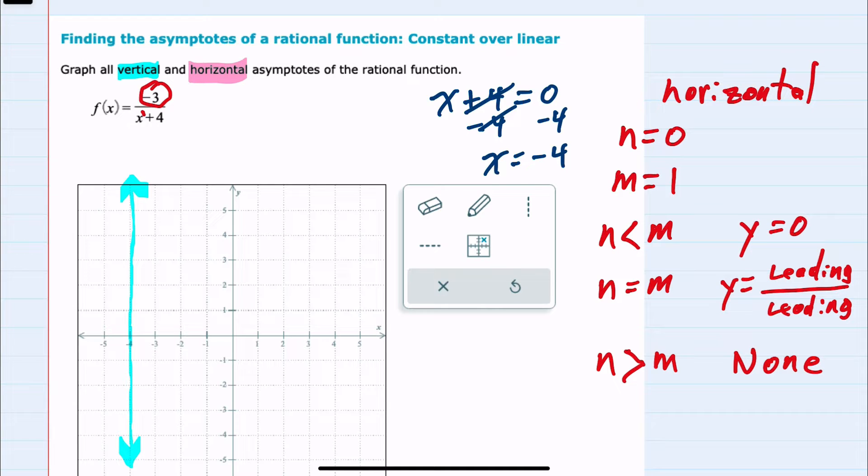So in this case, we have 0 and 1. The degree of the top is less than the degree of the bottom. We have one horizontal asymptote, and that is going to be where y equals 0.